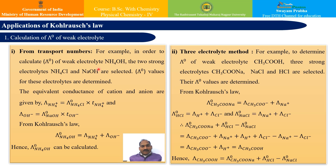Let us see the applications of Kohlrausch law. For strong electrolytes, the equivalent conductance at infinite dilution can be obtained directly by extrapolation of the graph of equivalent conductance against the square root of concentration. However, for weak electrolytes, the increase is not linear and therefore cannot be determined by simple extrapolation. Instead, it can be obtained indirectly from the Kohlrausch law — one way is using transport numbers.